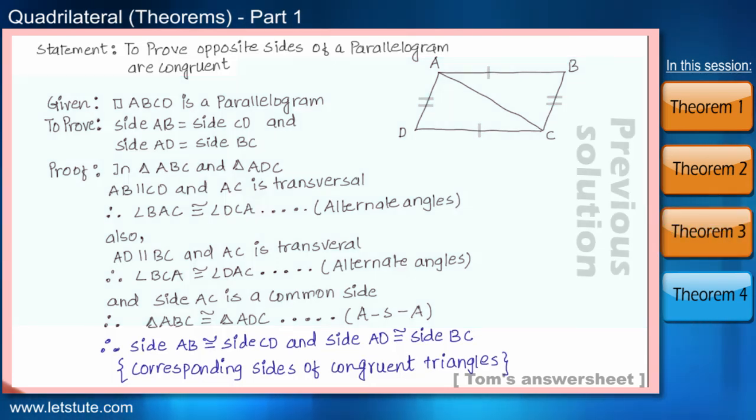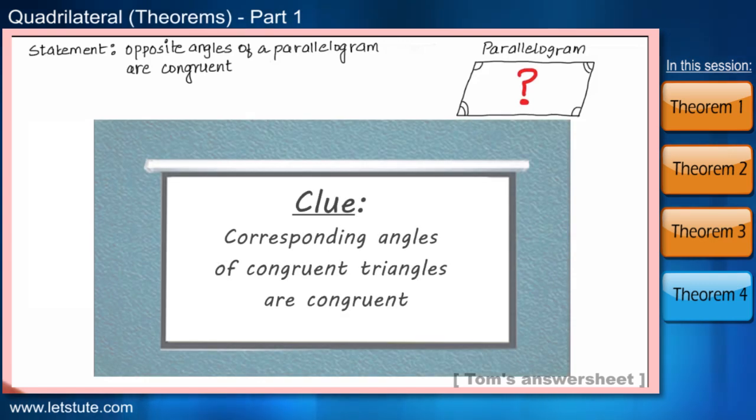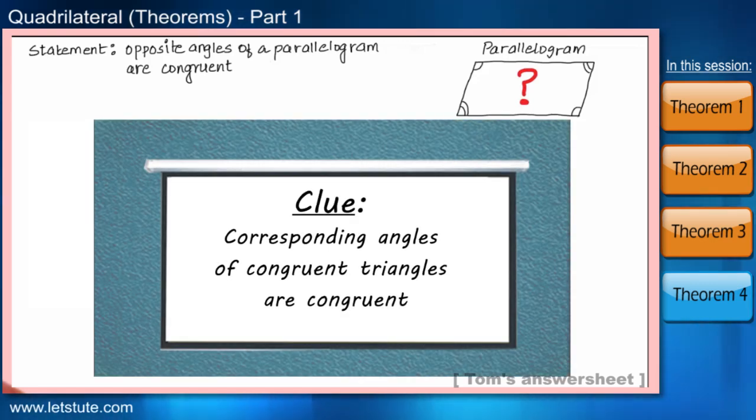what if you are asked to prove opposite angles of a parallelogram are congruent? How will you go about it? Here's a clue. The corresponding angles of congruent triangles are congruent. Can you do it now? Let's have a look at this proof.